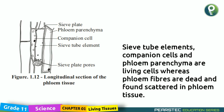Sieve tube elements, companion cells, and phloem parenchyma are living cells. Whereas phloem fibers are dead and found scattered in phloem tissue.